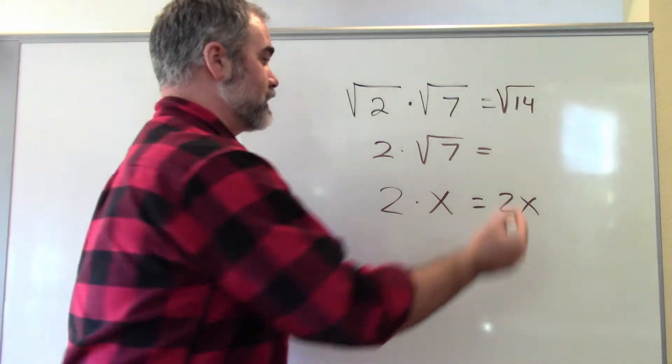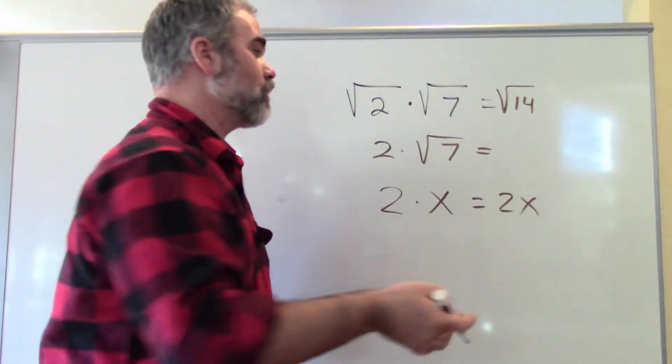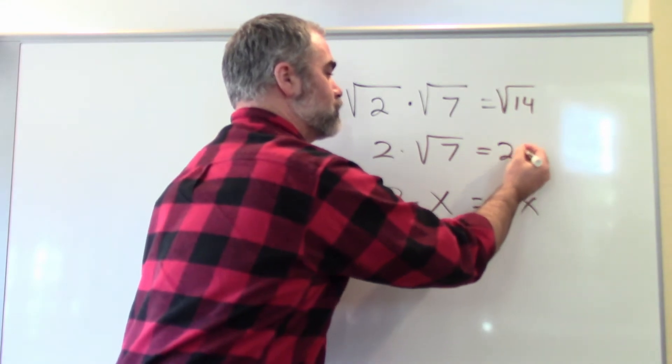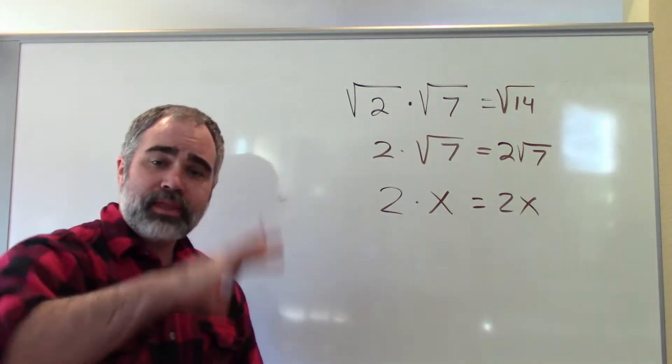All I can do is write it like this. You can either write it as a decimal, which is acceptable in some classrooms, or you can simplify it as 2 times root 7. And that's totally acceptable.